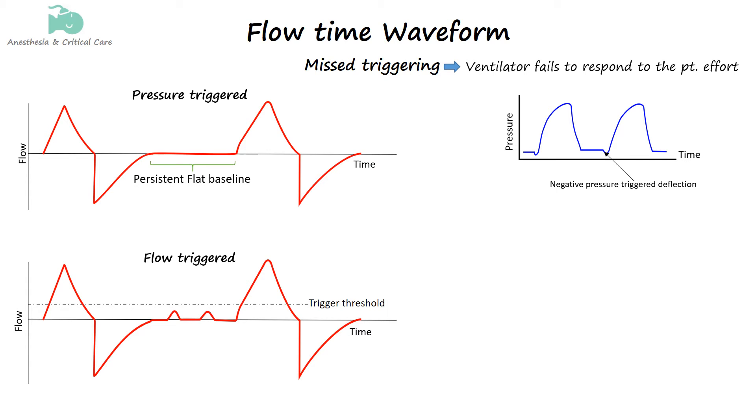If the ventilator is flow-triggered, small bumps may appear after expiration indicating the patient is trying to trigger. However, if the flow generated is insufficient to reach the trigger threshold, the ventilator will not deliver a breath. The causes of missed triggering include low-sensitivity settings which prevent the ventilator from detecting weak inspiratory efforts, mechanical issues such as leaks in the ventilatory circuit or malfunctioning sensors, and patient factors such as very weak or irregular breathing efforts.